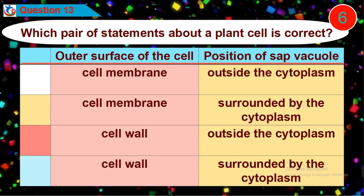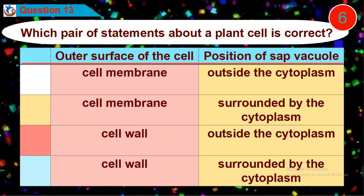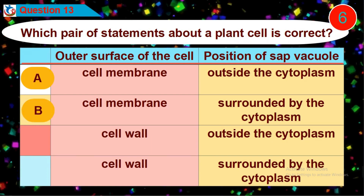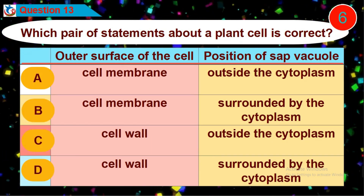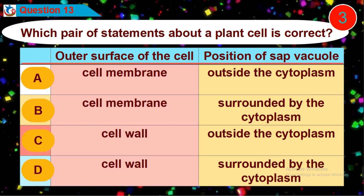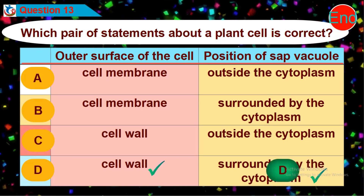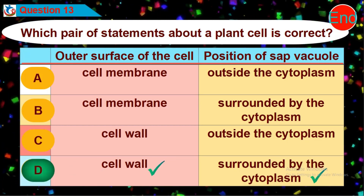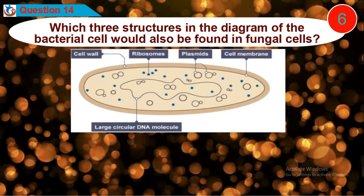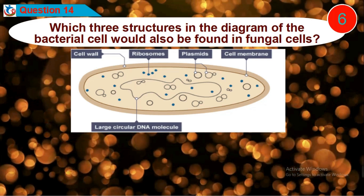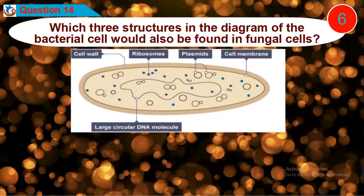Question 13: Which pair of statements about a plant cell is correct? Is it option A, B, C, or D? Question 14: Which three structures in the diagram of the bacterial cell would also be found in fungal cells? Is it option A, B, C, or D?